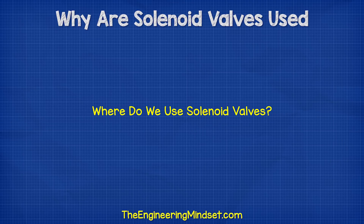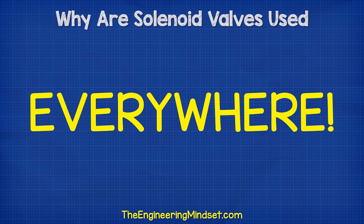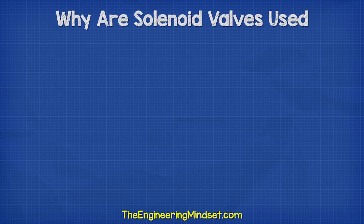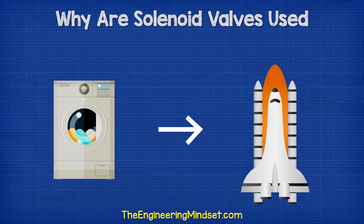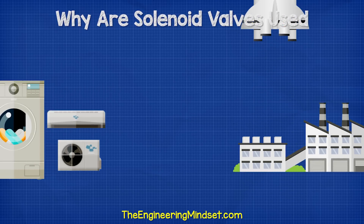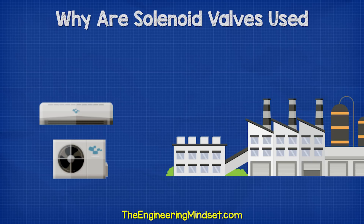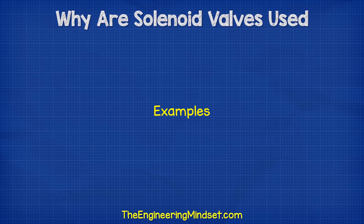So where do we use or find solenoid valves? The short answer is everywhere. Solenoid valves can be found in everything from washing machines up to space rockets, although we're going to focus on the industrial and HVAC applications for this video. Let's have a look at some examples.